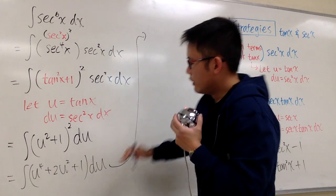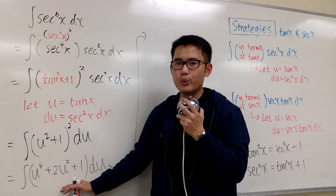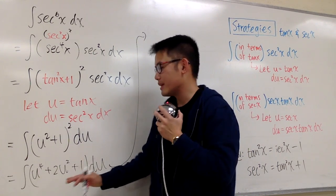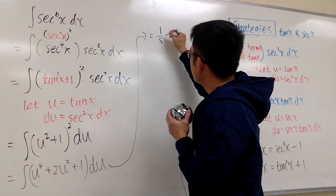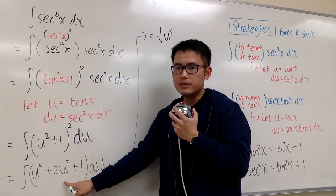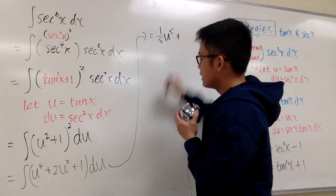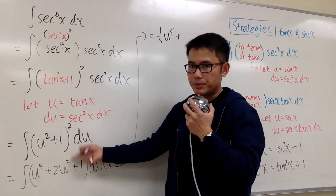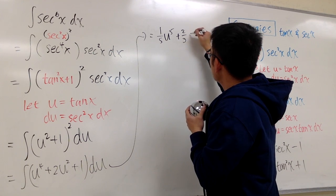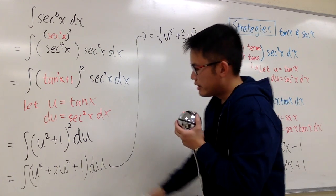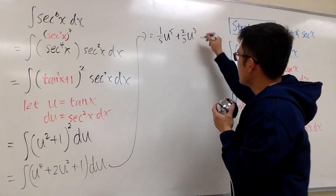Alright, from here we can integrate in the u world, it's just a polynomial. The integral of u to the 4th power, we get 1/5 u to the 5th power, and then for this one we get plus, I add 1 to the exponent, divide by that, so 2/3 u to the 3rd power, and then the integral of 1 in the u world is just plus u.